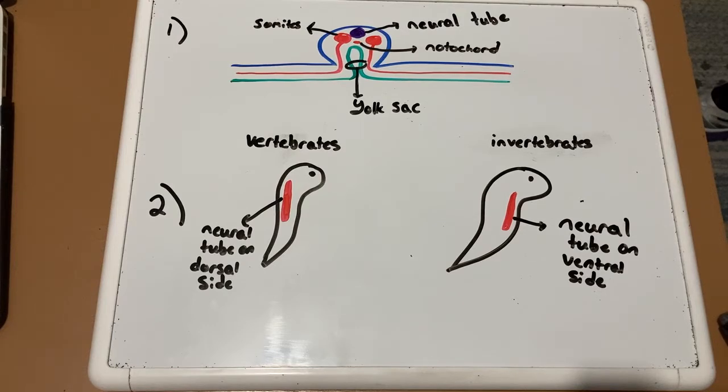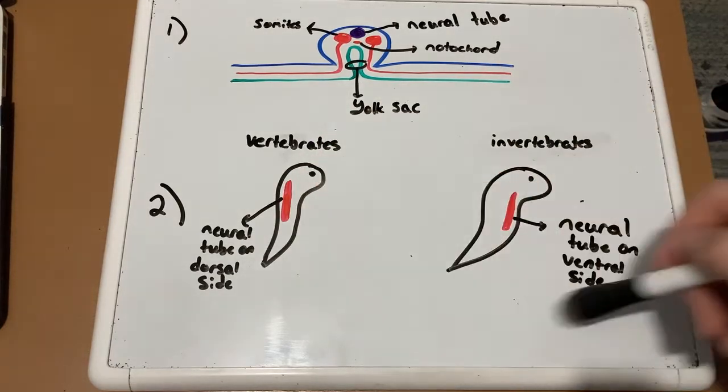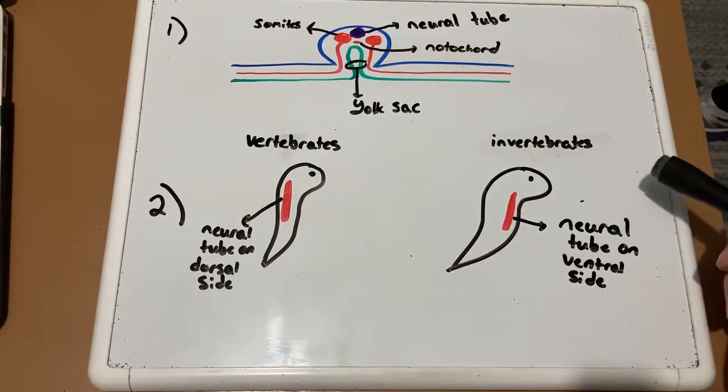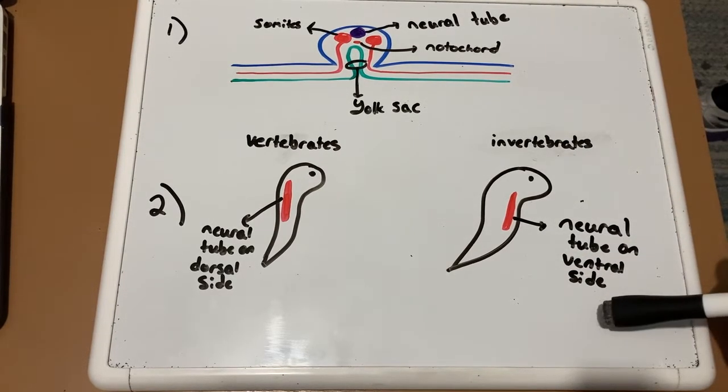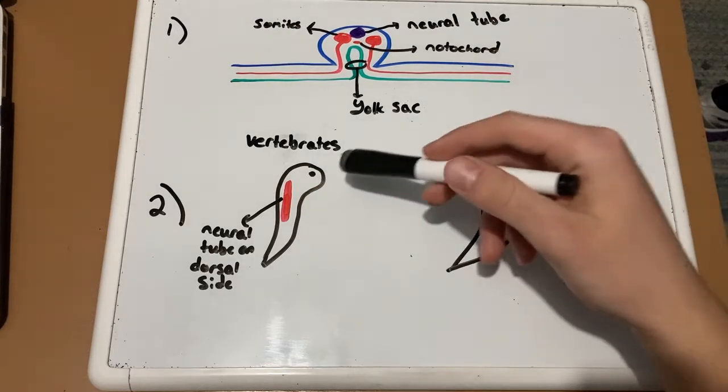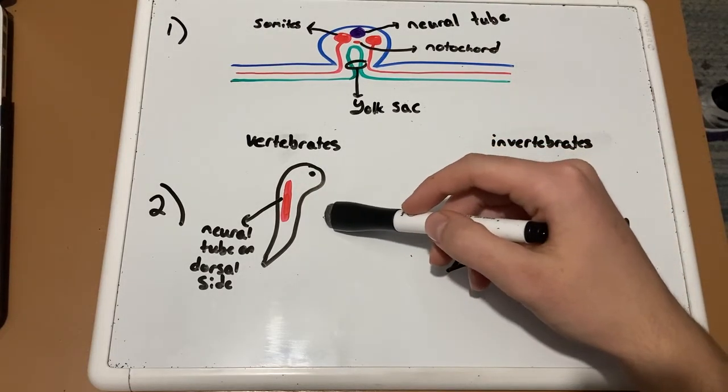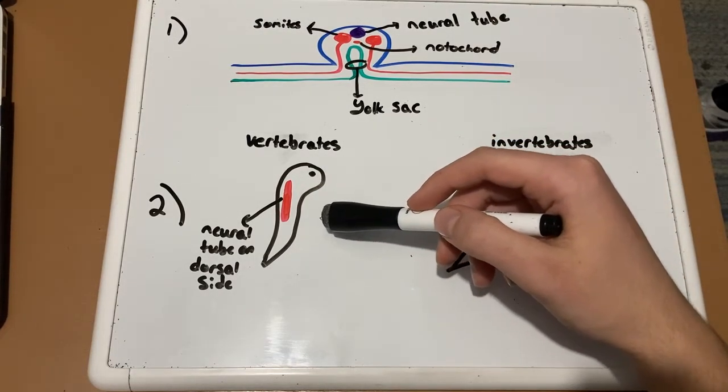Interestingly, the tube is on the ventral side of the embryo rather than the dorsal side. So again, this picture is not drawn to scale, it just helps me better memorize. So in invertebrates, the neural tube is formed on the ventral side, or near the stomach, while in vertebrates, as we've talked about before, the neural tube forms on the dorsal side, or towards the back.